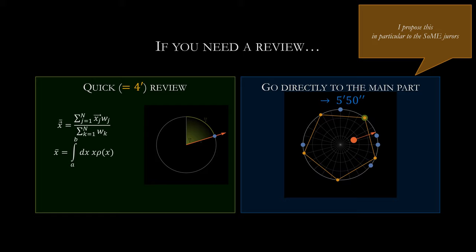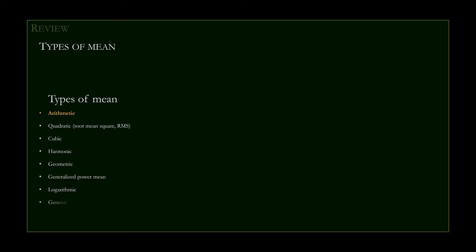A viewer familiar with these matters may immediately skip to the next section. Many types of mean are known: arithmetic, quadratic or root mean square, cubic, harmonic, geometric, generalized power mean, logarithmic, generalized f-mean, and more. Other quantities that characterize central tendency — mode, median, mid-range — with significance and properties more or less close to those of the mean, are also useful. We call them central tendency measures.